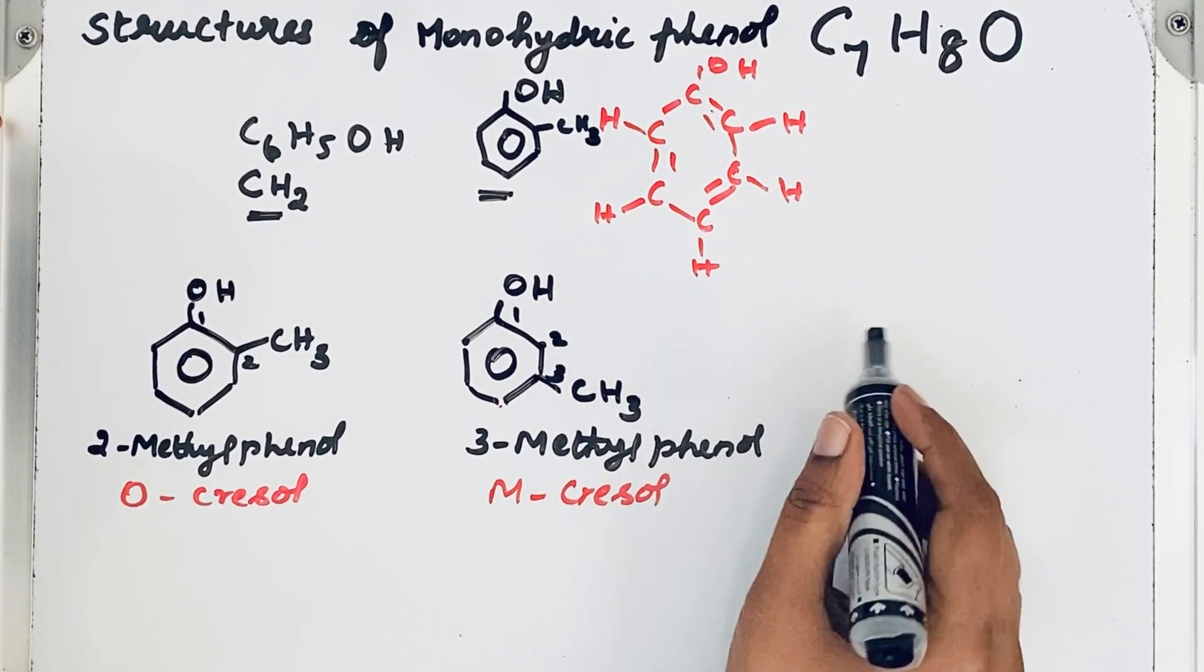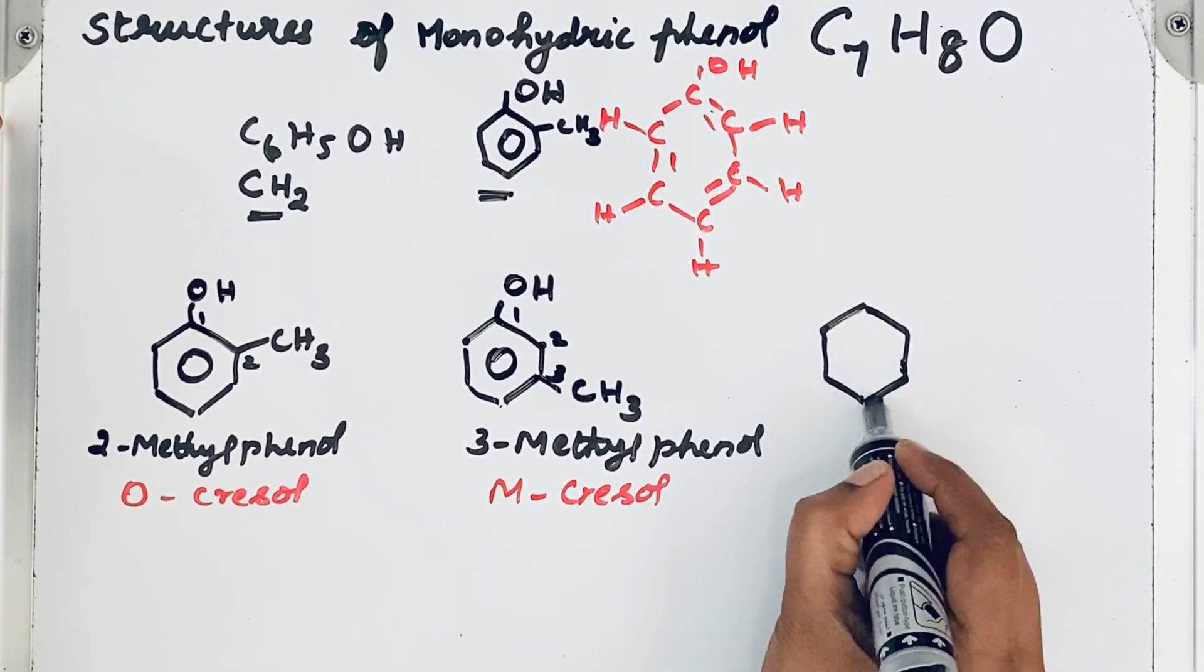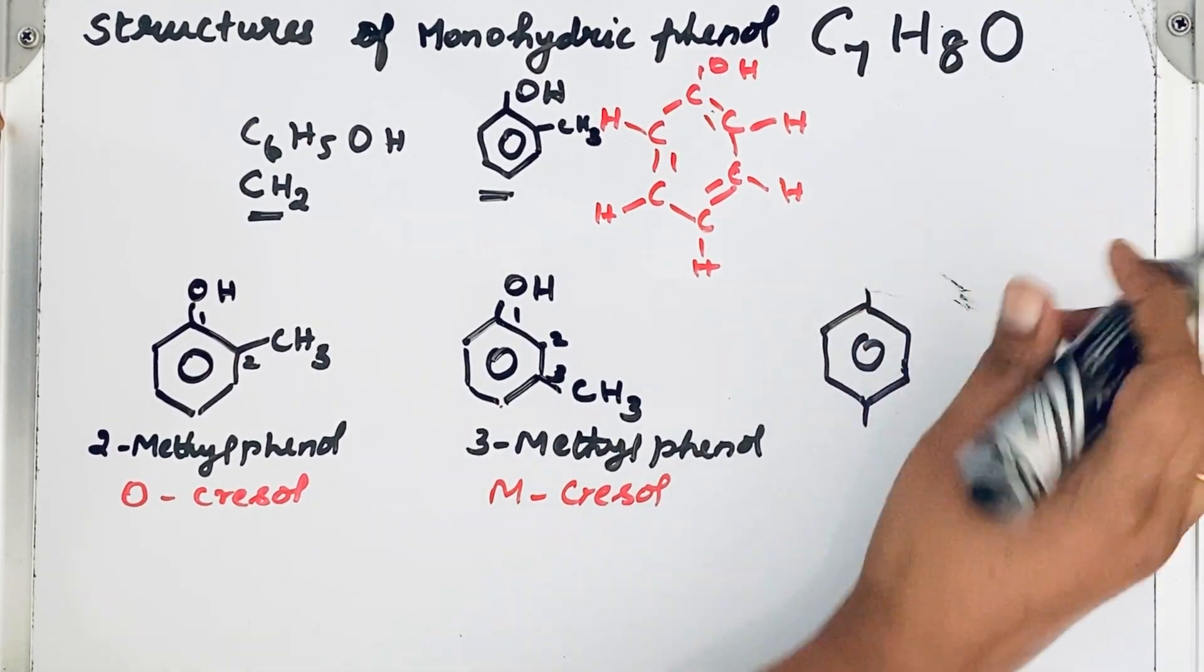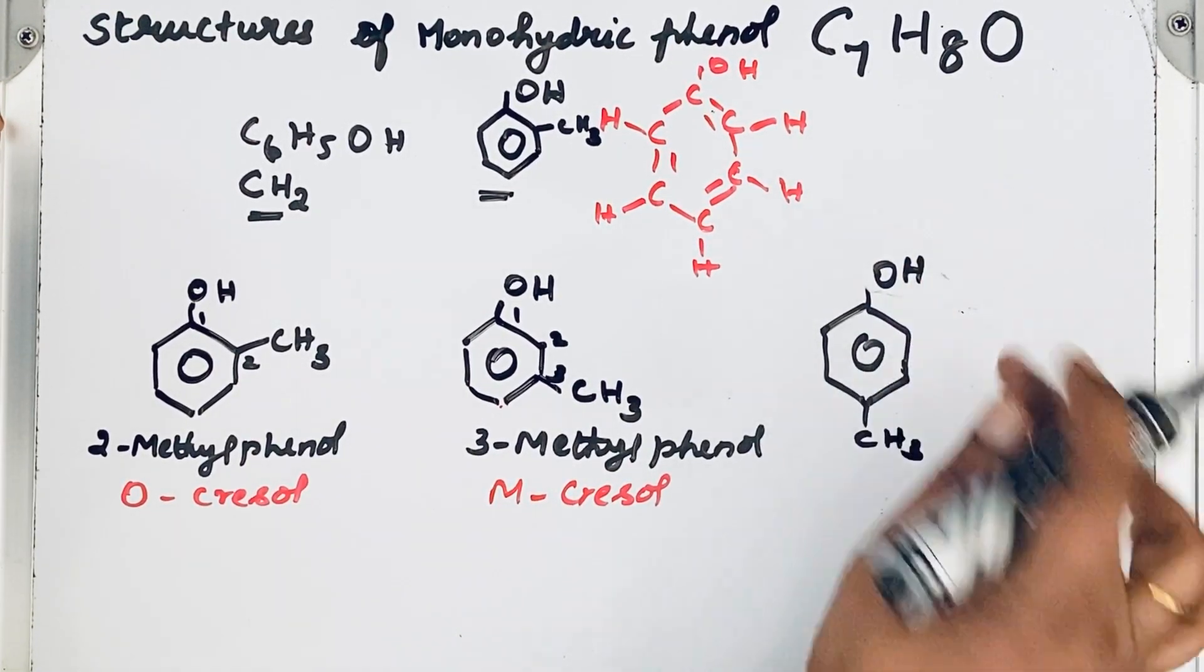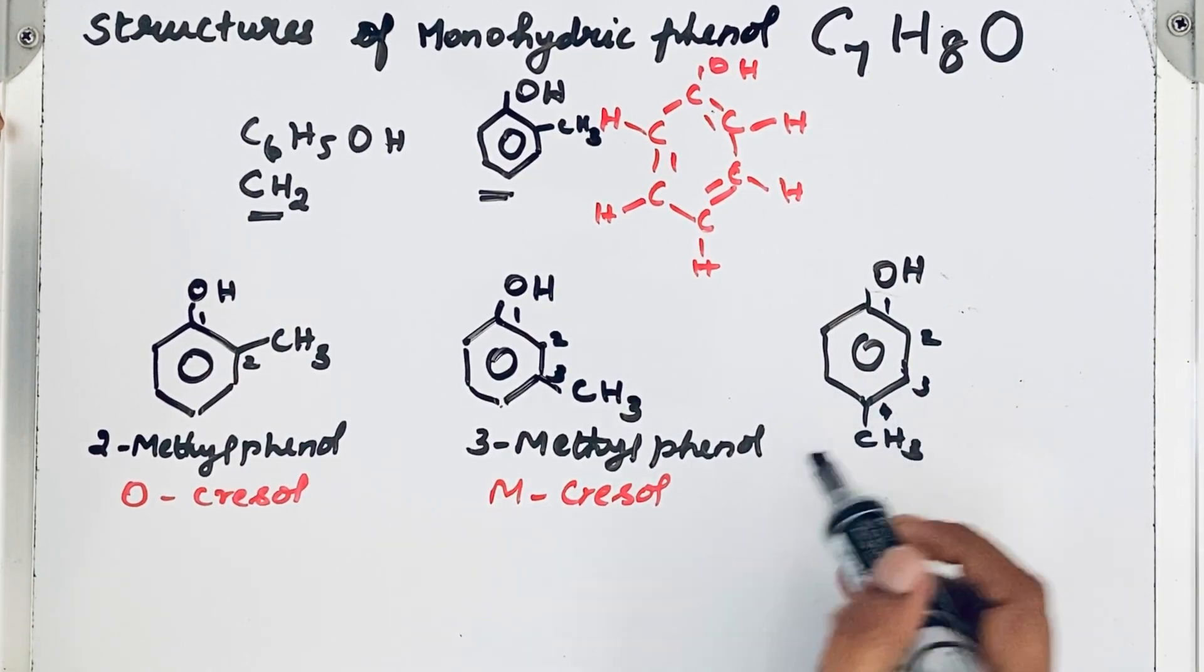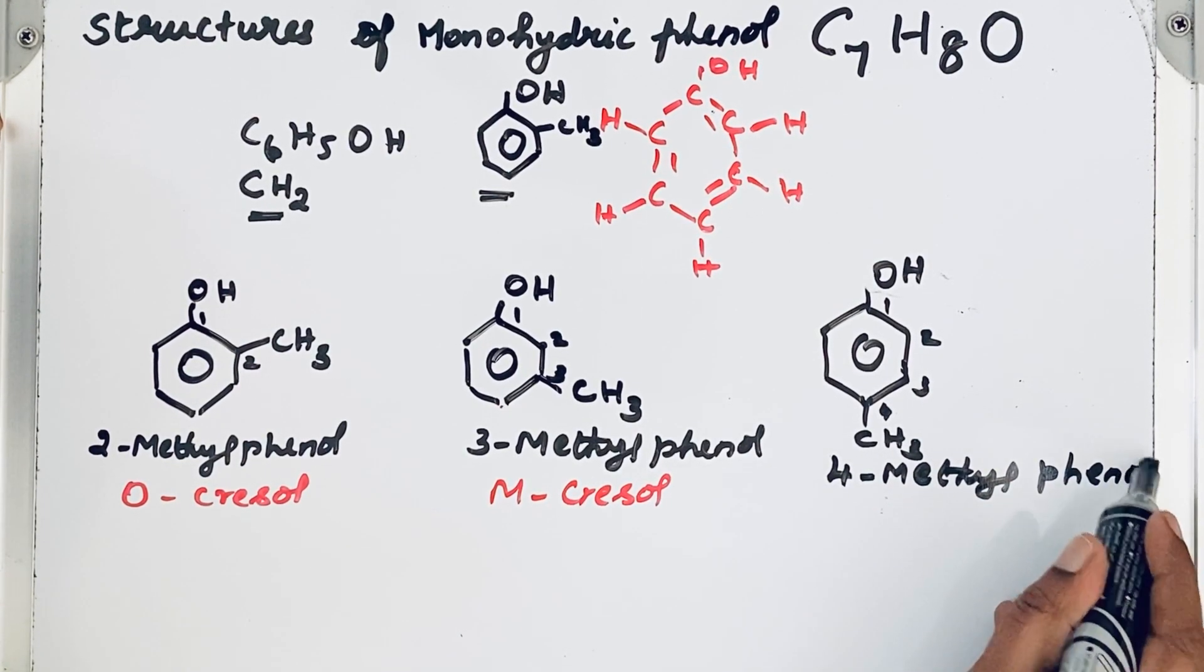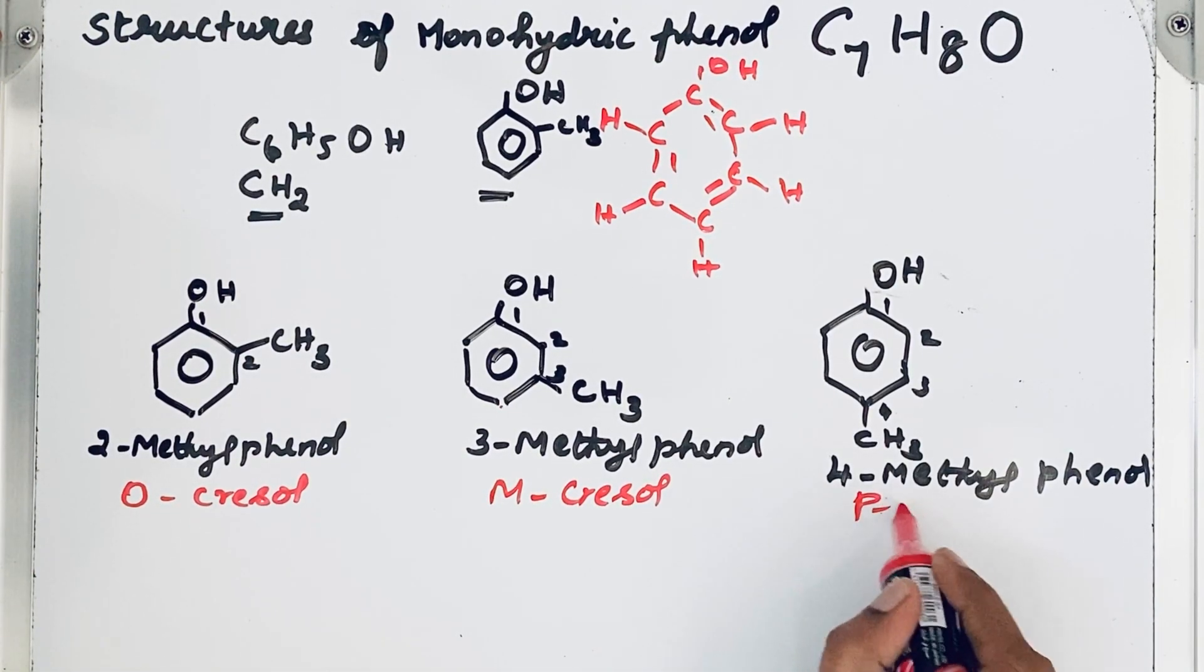Now let us try another structure. We will move the CH3 group to the fourth position. Here OH, you can move CH3 group to the fourth position. So give numbering one, two, three, four. So 4-methyl, 4-methylphenol. Common name para-cresol.